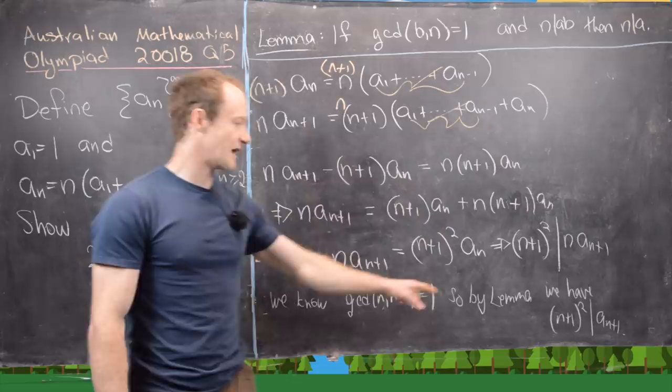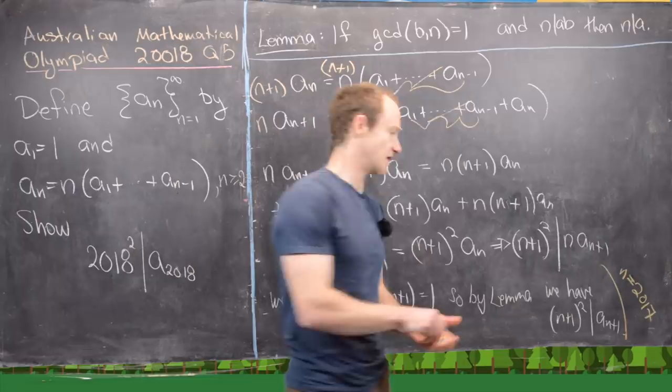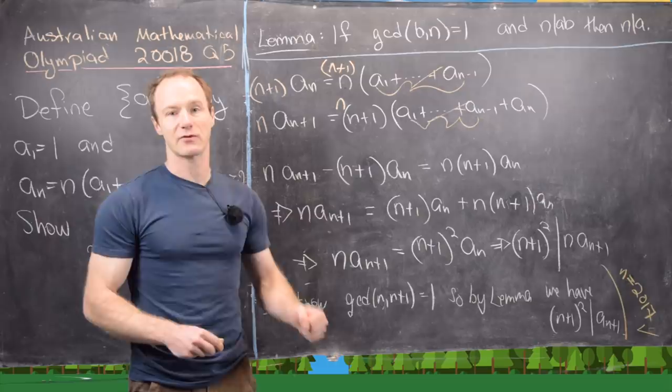But notice this is a very general thing. If we set n equal to 2017, which means n plus 1 equals 2018, then we have the solution. And so we're done.